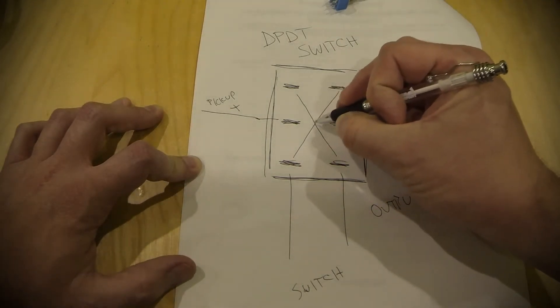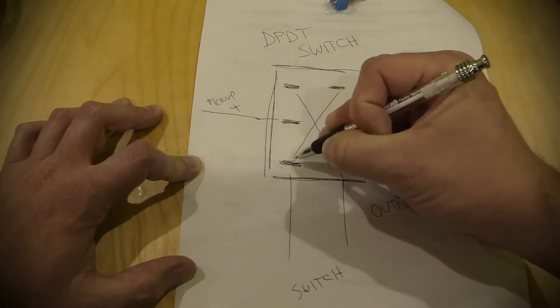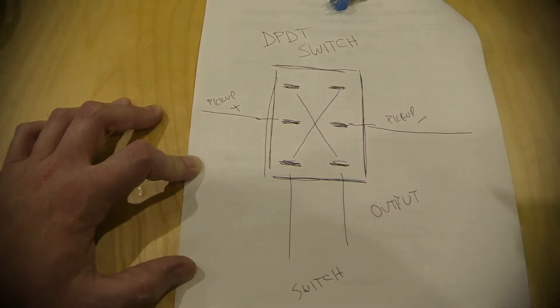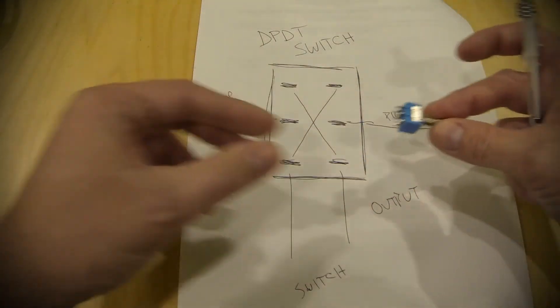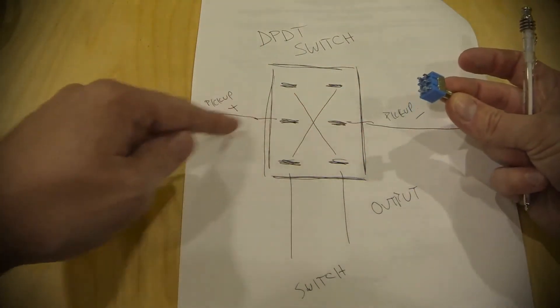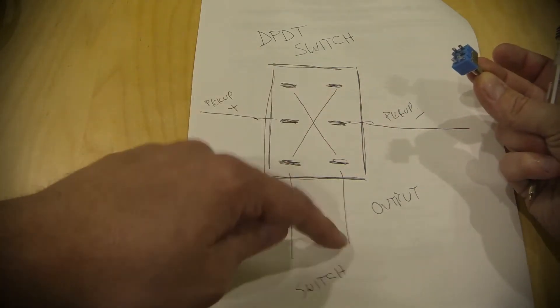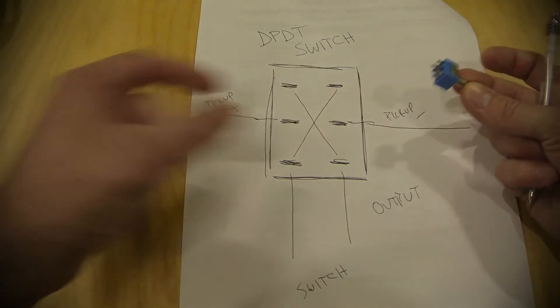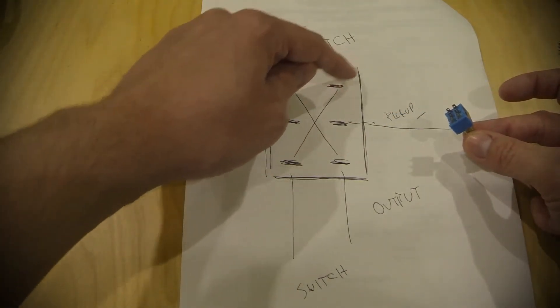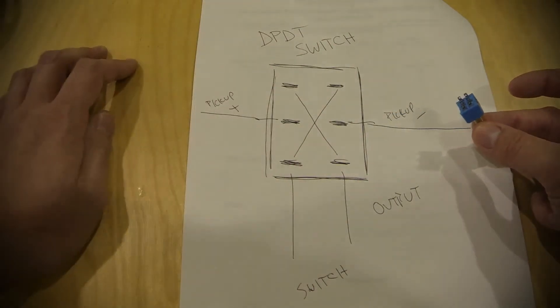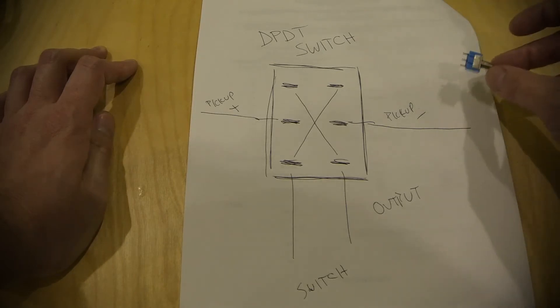Now, these are not connected here in the center. This pin is connected to this pin. This pin is connected to this pin. They stay independent. And what happens is when you flip this switch, you go from your standard negative going out to where it's supposed to, positive going out to where it's supposed to. You flip the switch. You're now connected here, which reverses them very simply and changes the phase on your pickup.